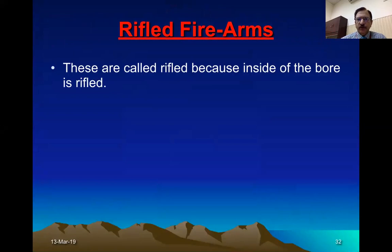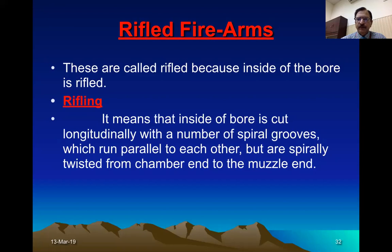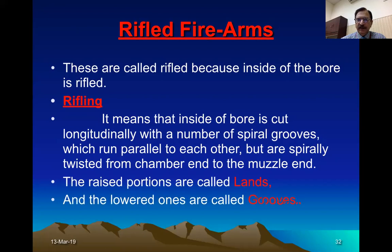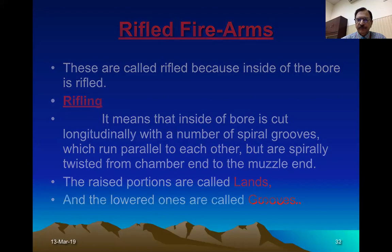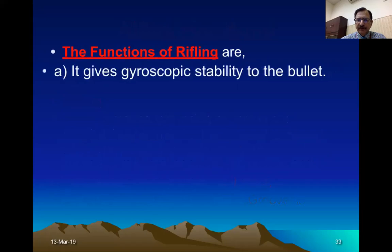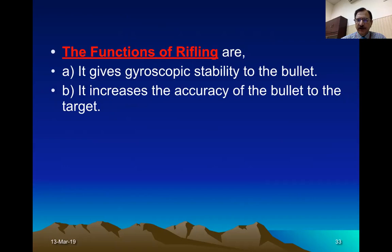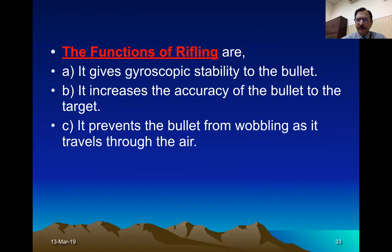Rifled firearms are called 'rifled' because the inside of the bore is rifled. Rifling means the inside of the bore is cut longitudinally with a number of spiral grooves that run parallel to each other but are spirally twisted from chamber to muzzle end. The raised portions are called lands and the depressed ones are called grooves. The function of rifling is that it gives gyroscopic stability — a spin to the bullet. During flight, this spin gives stability, increases accuracy to hit the target, and prevents the bullet from wobbling or becoming unstable.